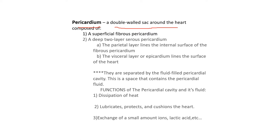In the pericardium, we have the superficial fibrous pericardium on the outside. Then there are two layers: the parietal layer that lines the entire surface of the pericardium — that's a serous layer — and then there's a visceral layer of the pericardium, also known as the epicardium. They're separated by pericardial fluid, which helps dissipate heat, lubricate, and protect and cushion the heart. If there's too much fluid, it can cause cardiac tamponade, associated with pericarditis.